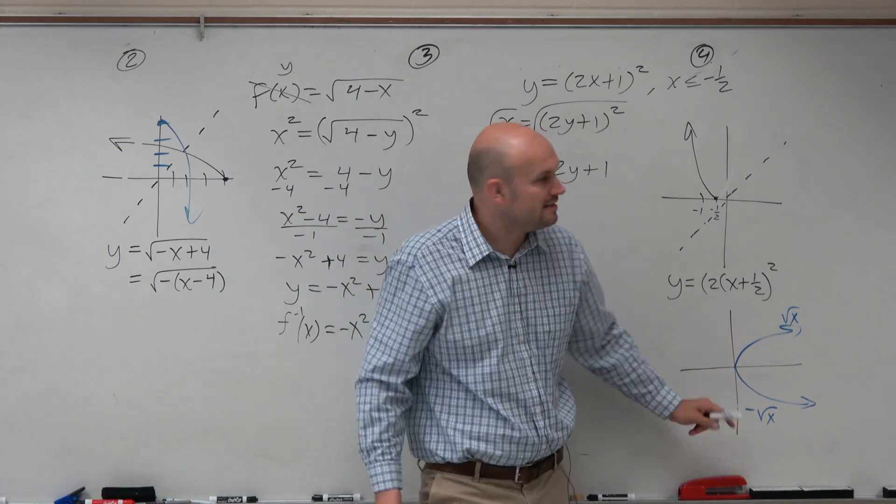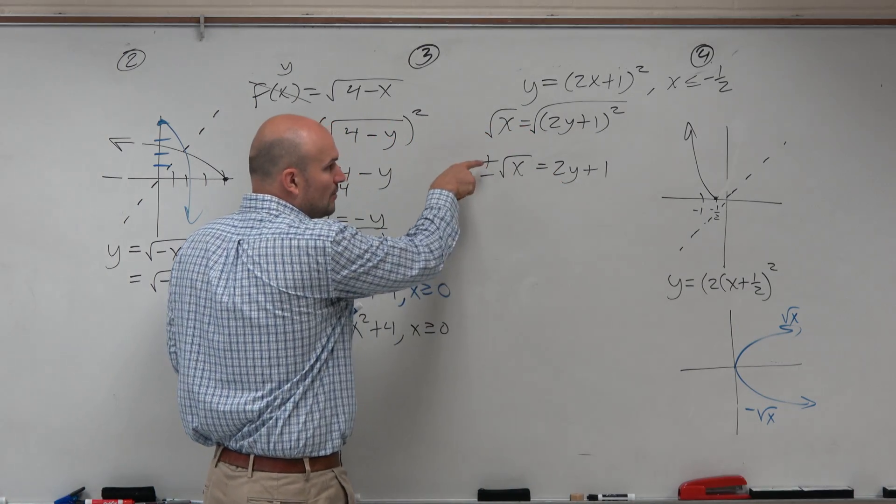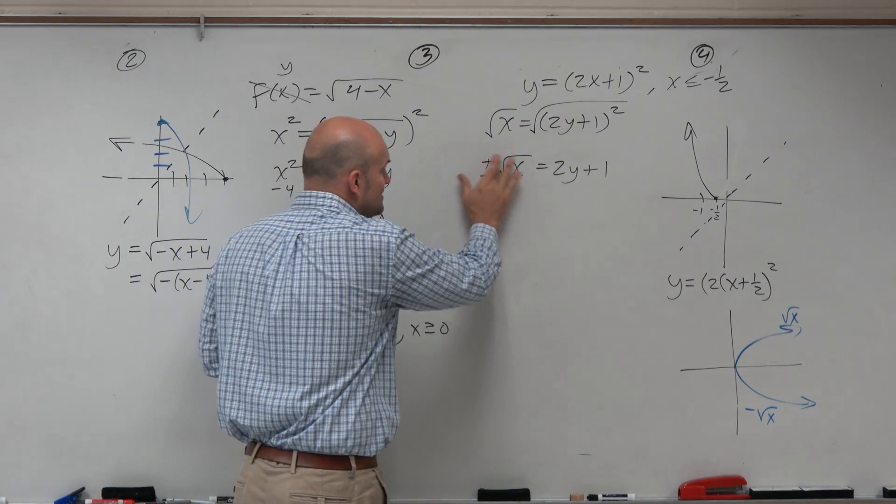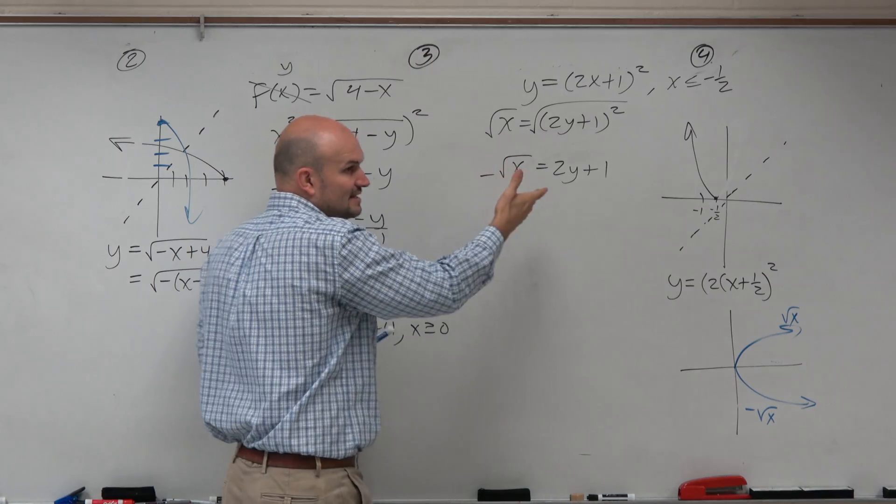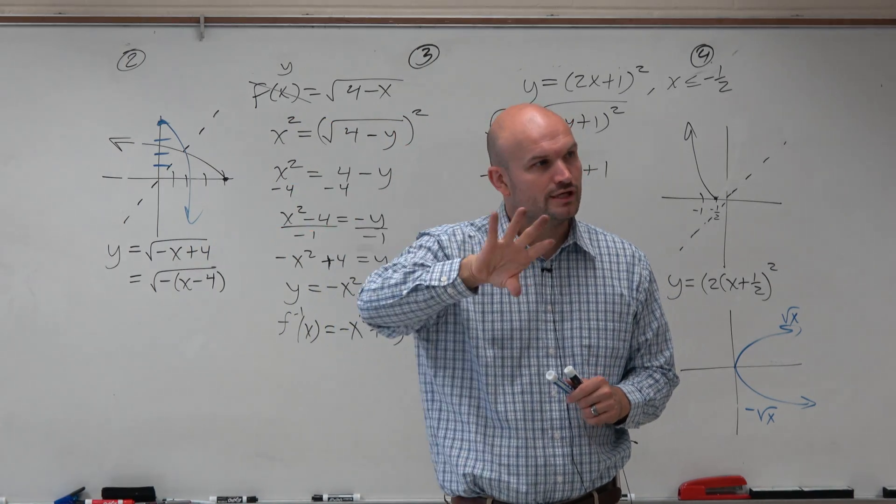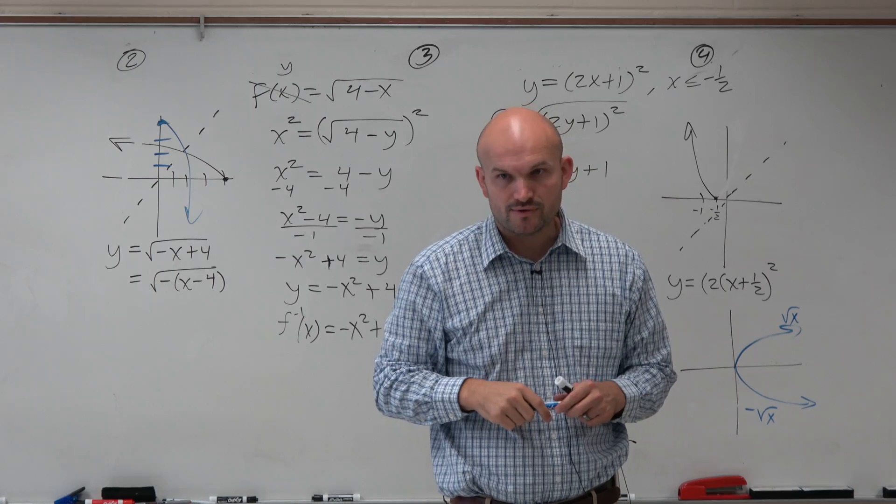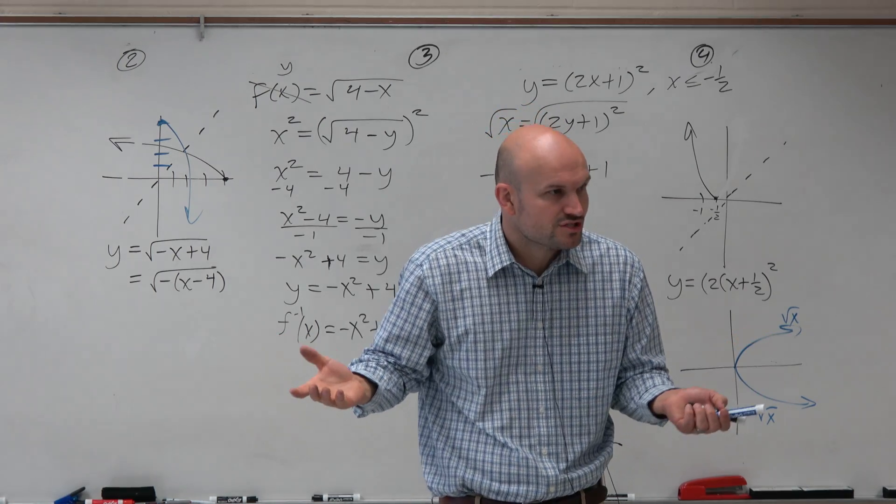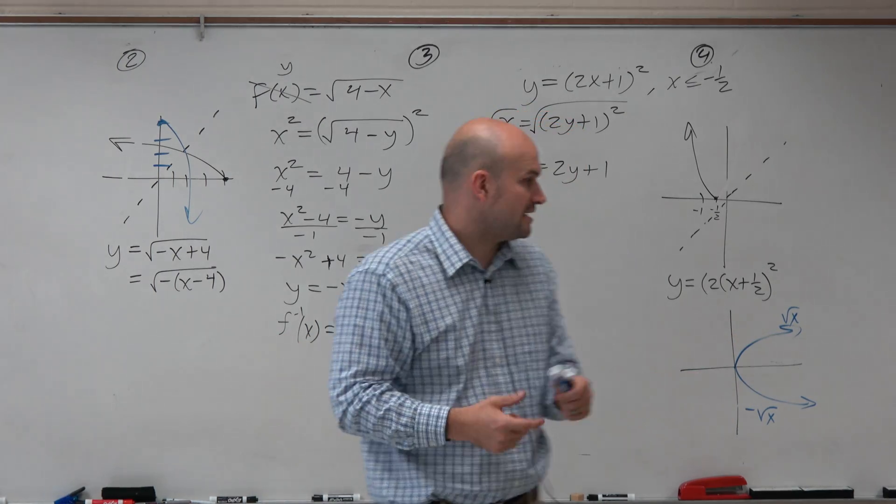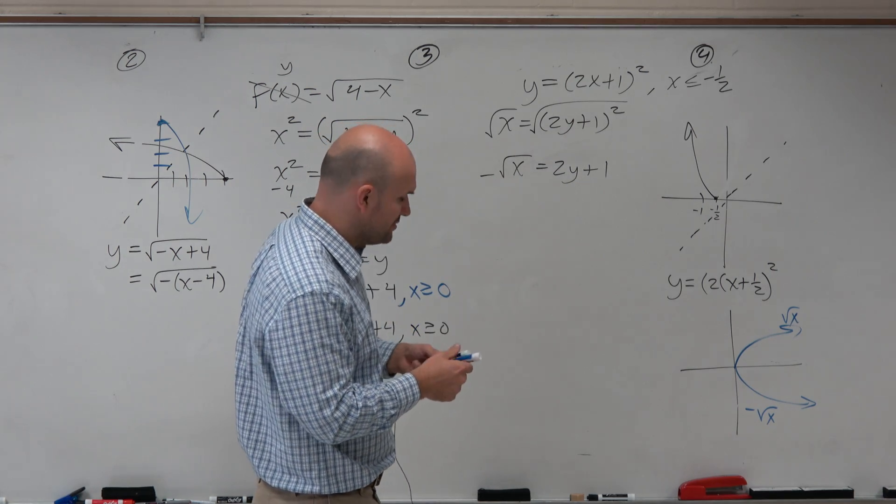You can see the negative version, right? So I'm not going to do, even though mathematically I use that plus or minus, in this context of this problem, we're only going to include the negative version of the square root. Because otherwise, we won't have a function, right? Which we know is not going to work. So we're restricting this to the negative square root.